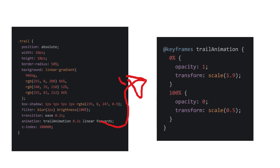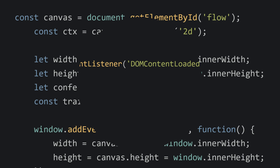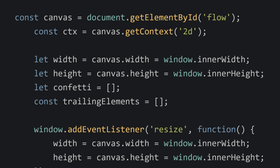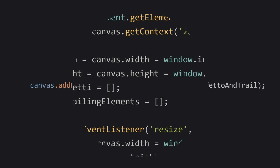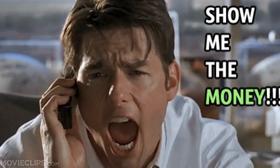Now let's begin with some actual coding. We put everything inside an event listener so that only after the DOM content is loaded, our animation will work. We do the usual steps to target the canvas and set its width. Now we have an event listener which calls the addConfettoAndTrail function on mouse move. I know I hate naming things but it's not like I am getting paid for this.